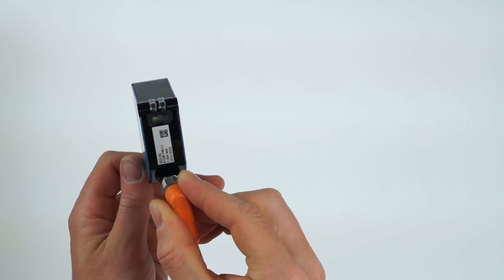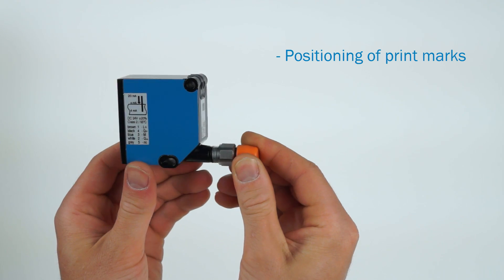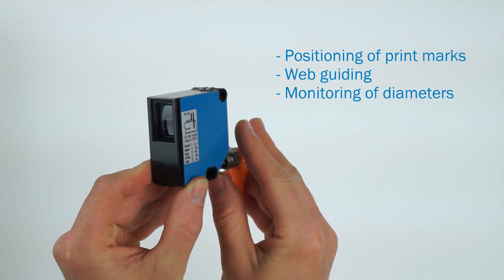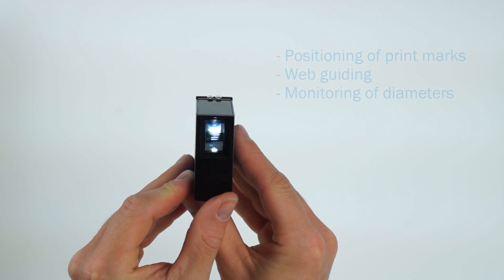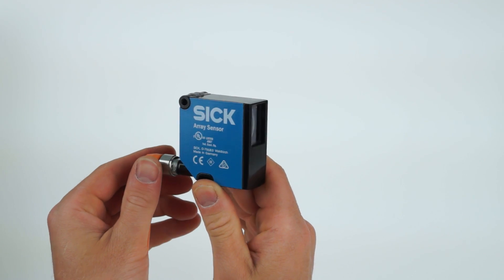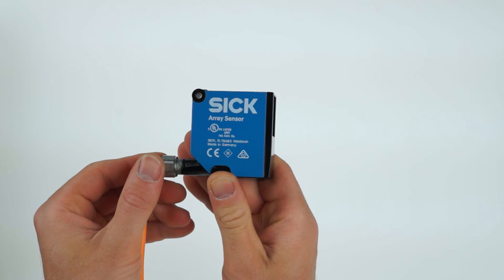No matter if the application is about positioning of print marks, web guiding, or the monitoring of diameters, the array sensor from SICK is the right solution due to its measuring proximity detection principle.